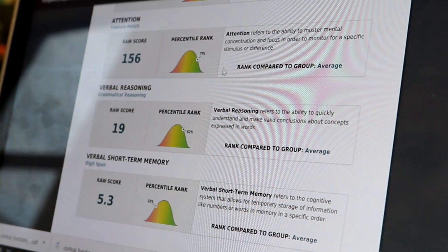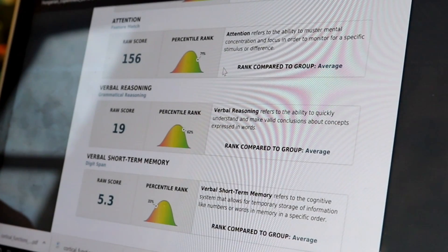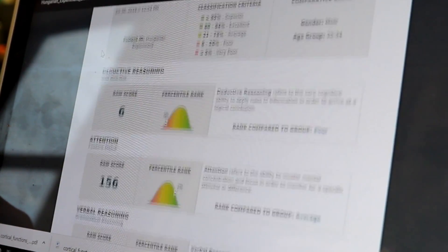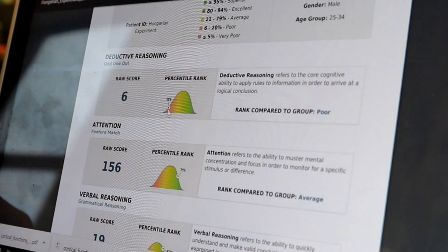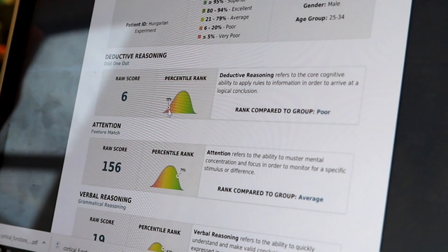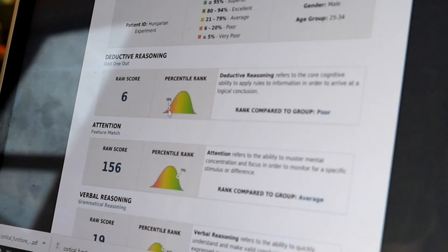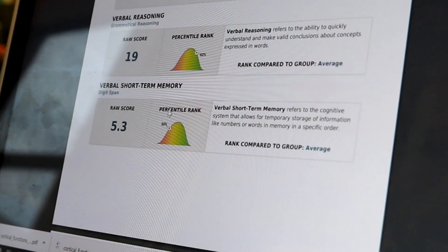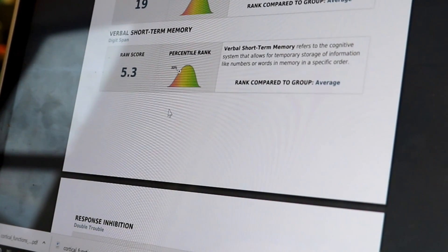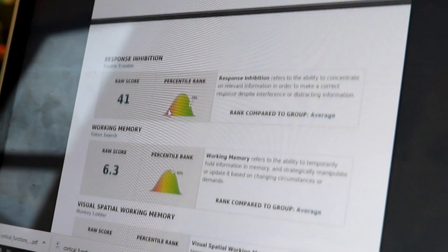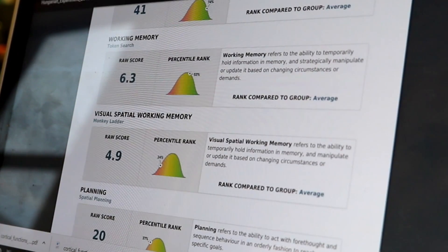If you look at your cognitive scores here, you can go to things like deductive reasoning, which was one we identified as being related to the Broadman area that you are experiencing that activity in. So that was consistent with our EEG results as well as verbal short-term memory. So those were two areas where you scored a little bit lower and it's consistent with what we see here on the brain scans.